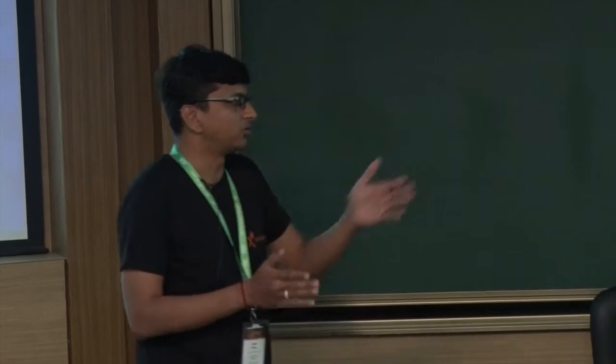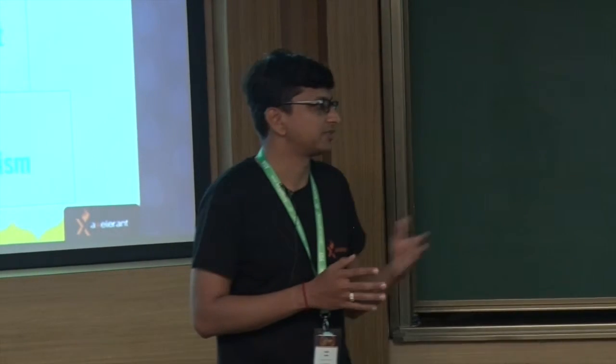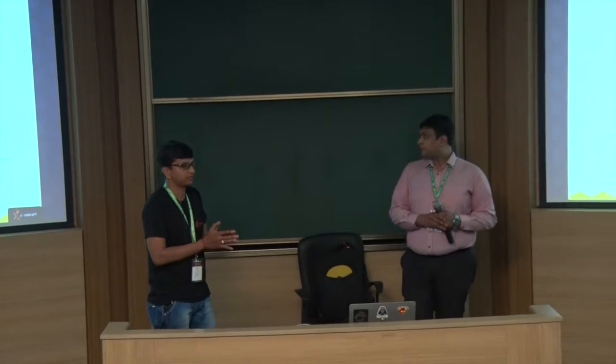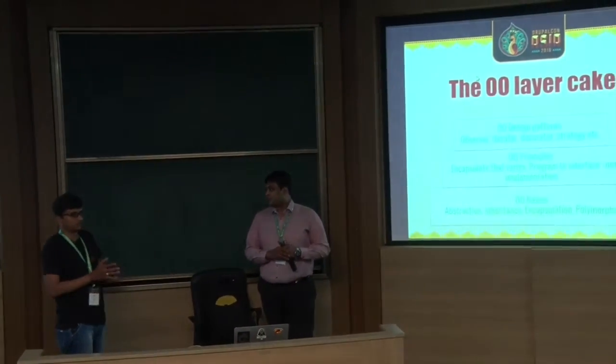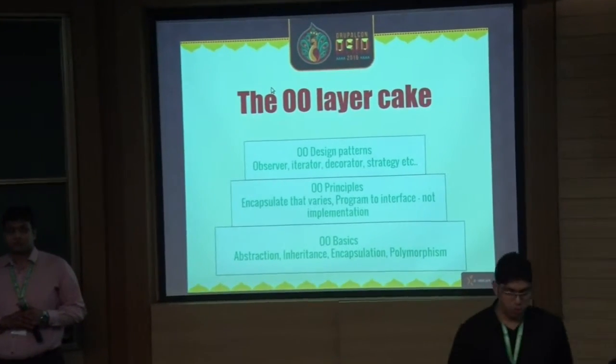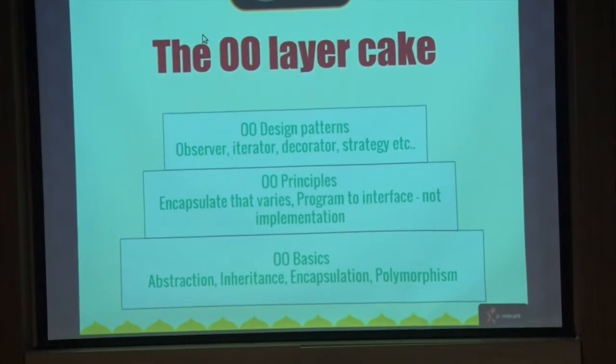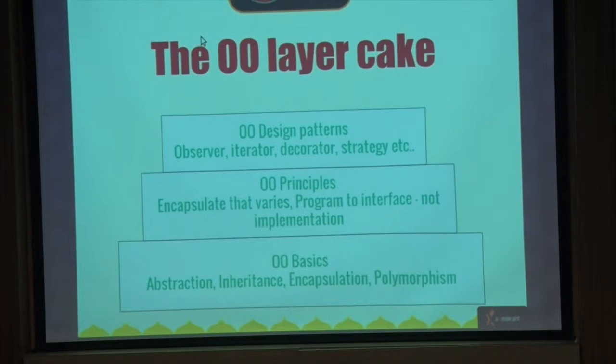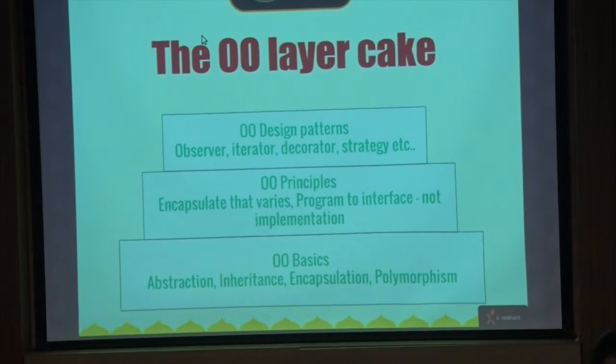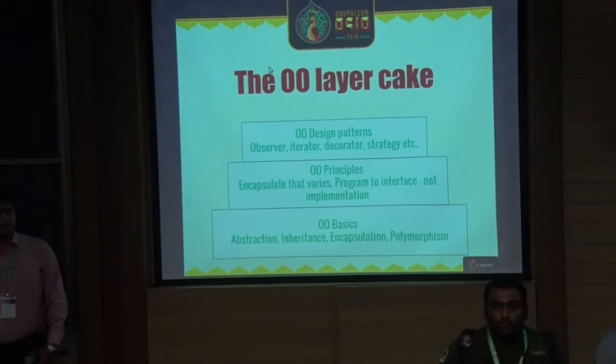Where do design patterns reside in OO layers? There are OO basics like abstraction, inheritance, and polymorphism. Above that are OO principles like 'encapsulate what varies' and 'program to an interface.' Encapsulate what varies means you take the portion of a program that changes frequently and encapsulate it, so it won't affect the rest of your code and the system will be more flexible, resulting in unanticipated consequences from code changes. Above that reside design patterns.